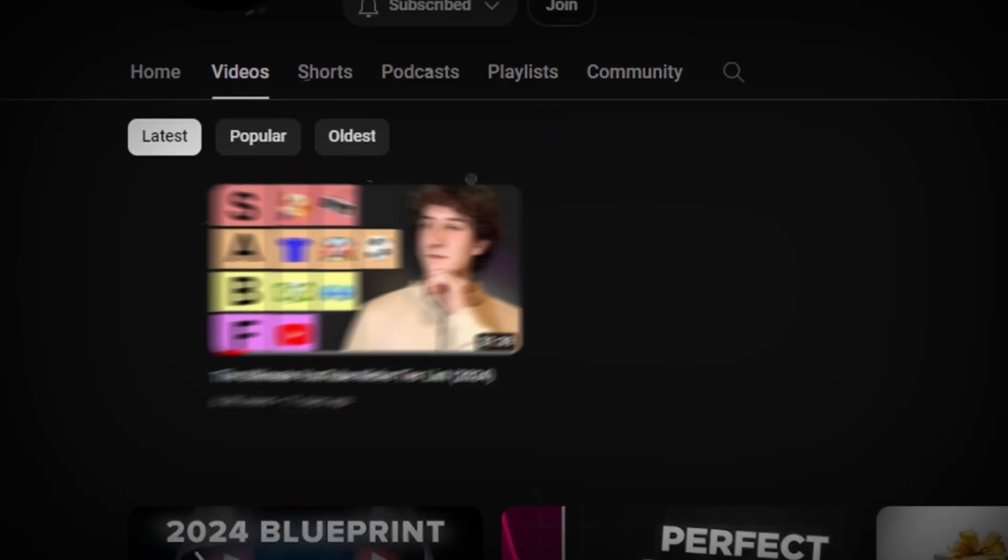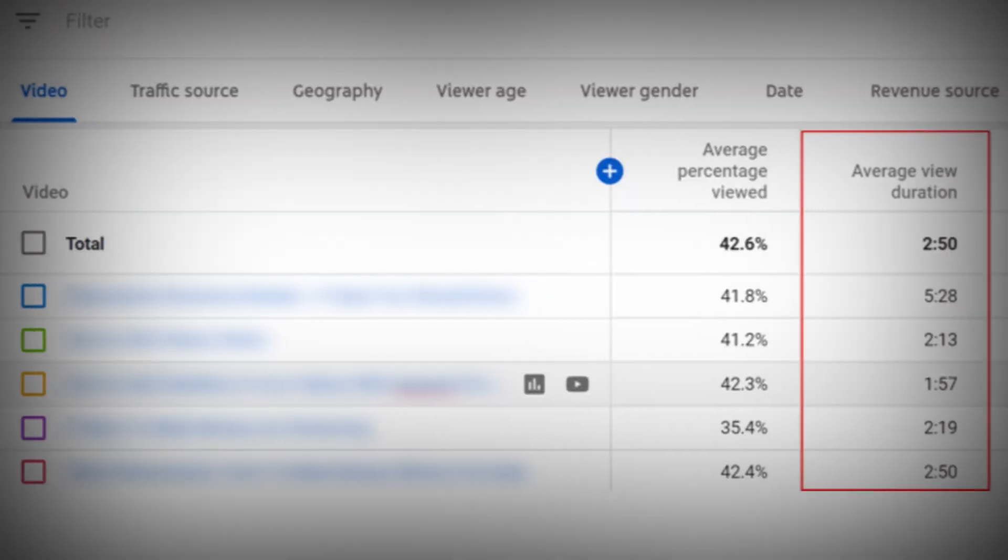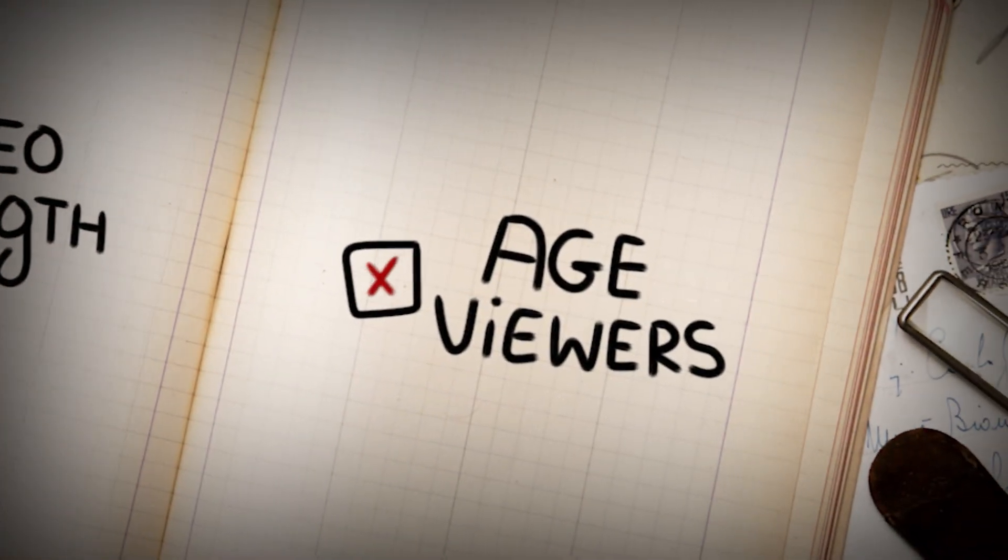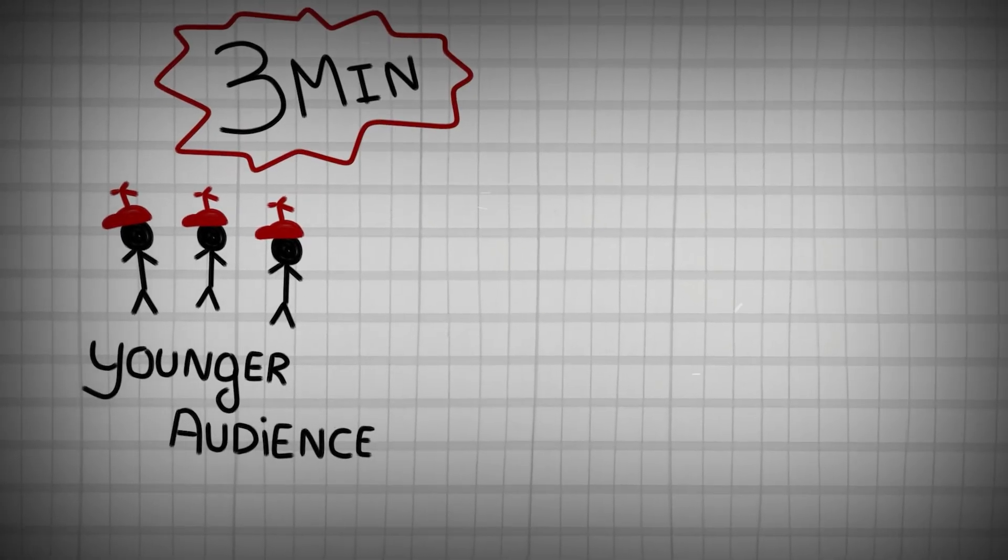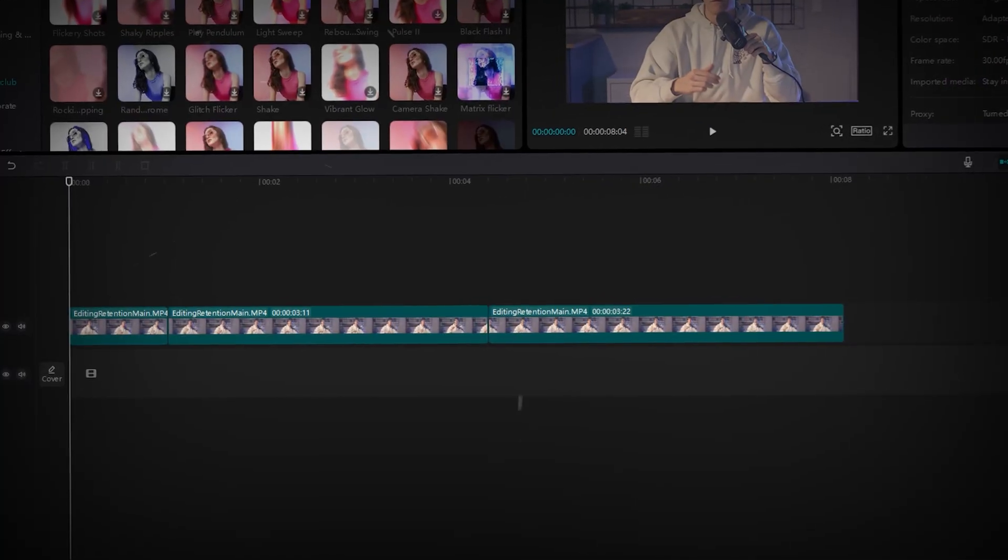But you'll also want to take this a step further if you really want to increase your retention. When you've consistently published videos for a while, you'll start to get more and more data on your audience and how long they watch your videos. This will obviously depend on video length and also the age of your viewers for the most part. So, for example, if you have a younger audience, your average watch time might be in the range of like three minutes versus if you have an older audience, it might go up to, let's say, six or seven minutes. Whatever this is, you'll want to expand the effort that you put into the first 30 seconds of your video to encompass the same amount as your average watch time.